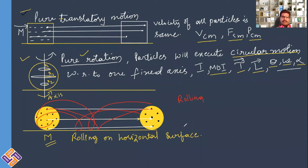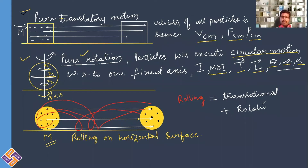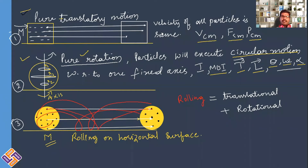We call such type of motion rolling motion. Rolling motion is the combination of translational motion and rotational motion. In order to discuss rolling motion you need a clear understanding of both translatory motion and rotational motion.